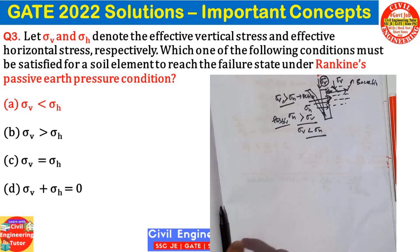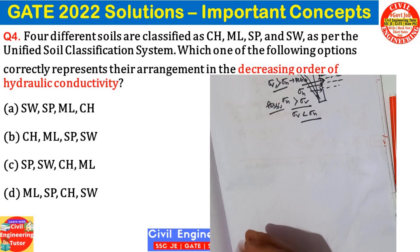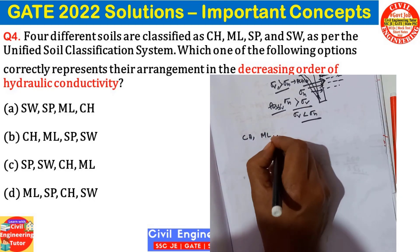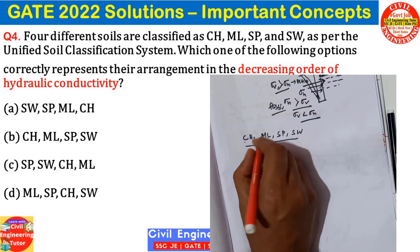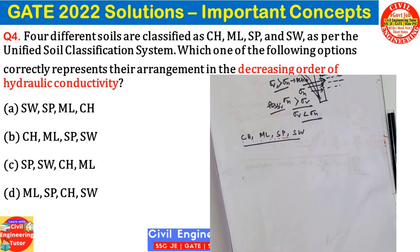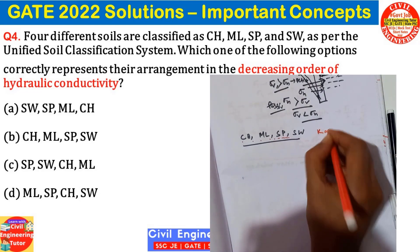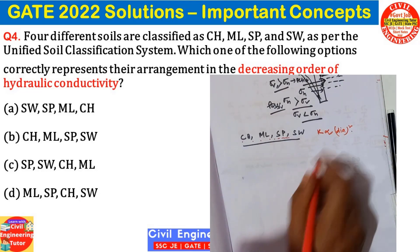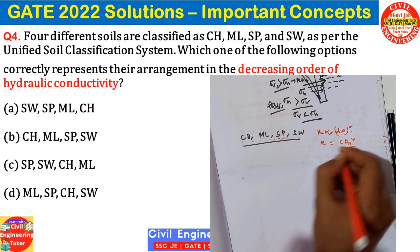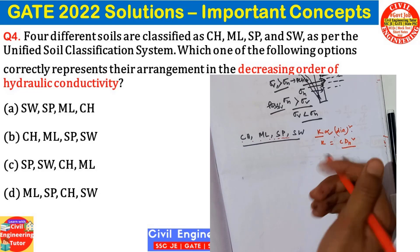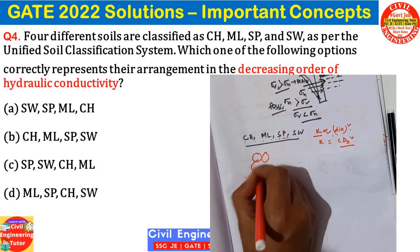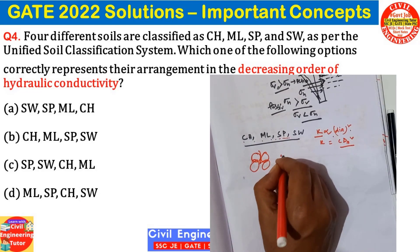Moving towards the next question, question number four: four different soils are classified as CH, ML, SP, and SW as per the Unified Soil Classification System. Which option correctly represents their arrangement in decreasing order of hydraulic conductivity? The first thing to know is that permeability k is proportional to diameter squared. You have already seen expressions like k equals C times d10 squared. So coefficient of permeability is proportional to diameter squared — larger particle size means higher permeability.